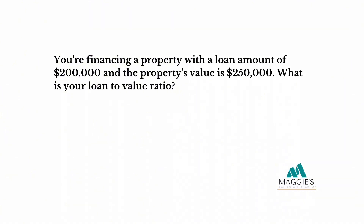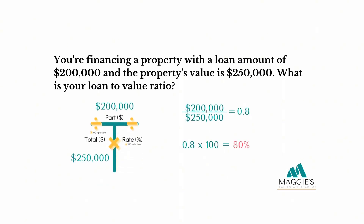Say you're financing a property with a loan amount of $200,000 and the property's value is $250,000. What is your loan to value ratio? Place the property value of $250,000 in the total column and the $200,000 loan amount in the part section on top. Divide $200,000 by $250,000 and that equals 0.8. Multiply by 100 and you get a loan to value ratio of 80%.